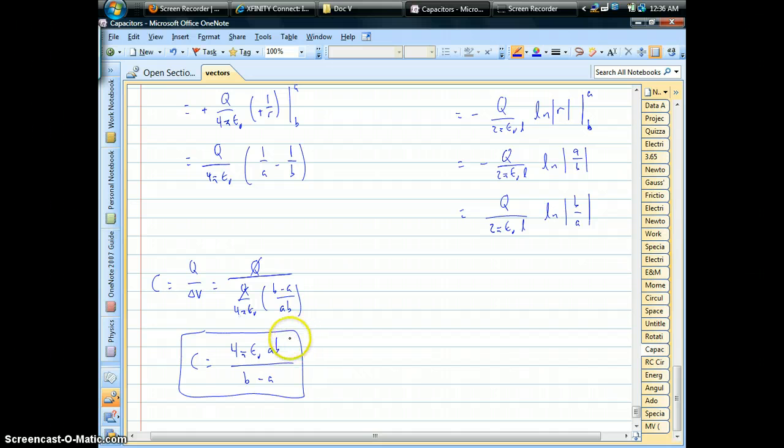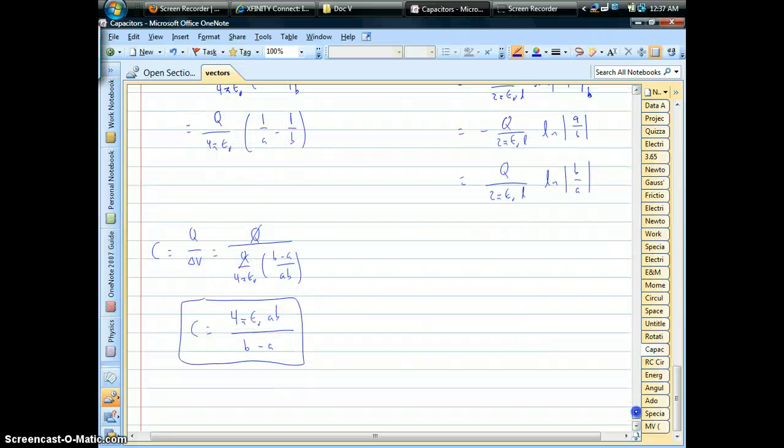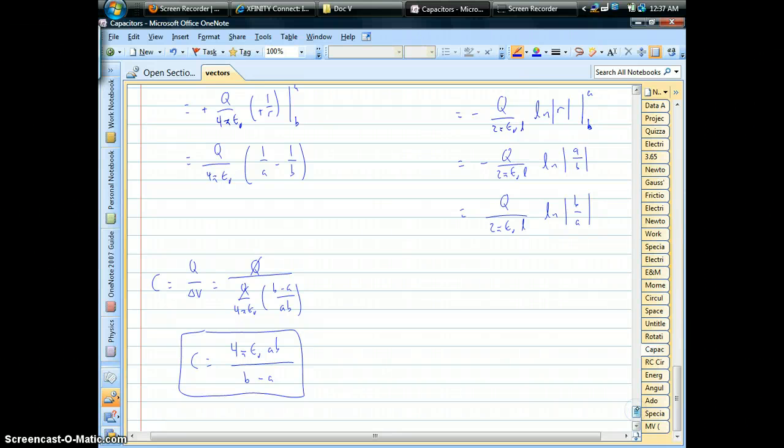So, it's basically depending. We have units of area on top. A times B. Those are meters times meters. So, the size of the shells matters. The bigger the shells, the more charge you have the possibility of storing. The denominator, B minus A, that's the gap. That's the size of the gap between the two spheres. So, if you make the gap smaller, you can actually increase the capacitance. So, we have control over that. We can make capacitors to be whatever value we need just by playing with just the size of your capacitor.